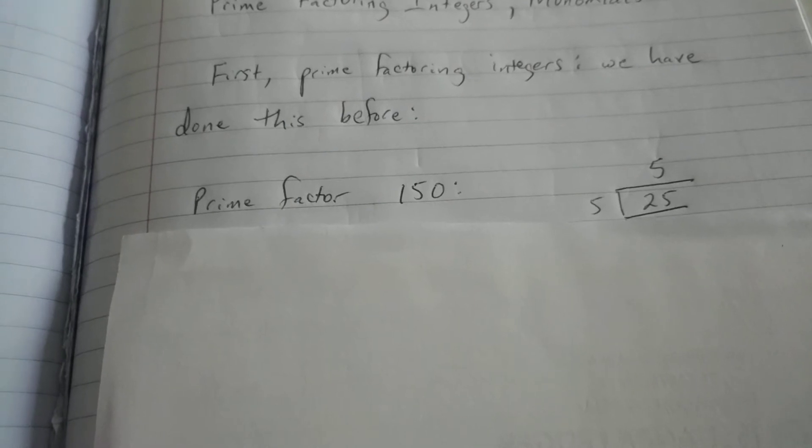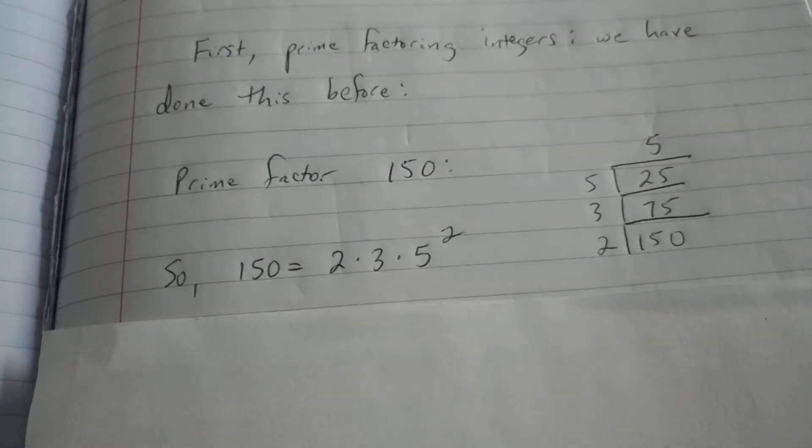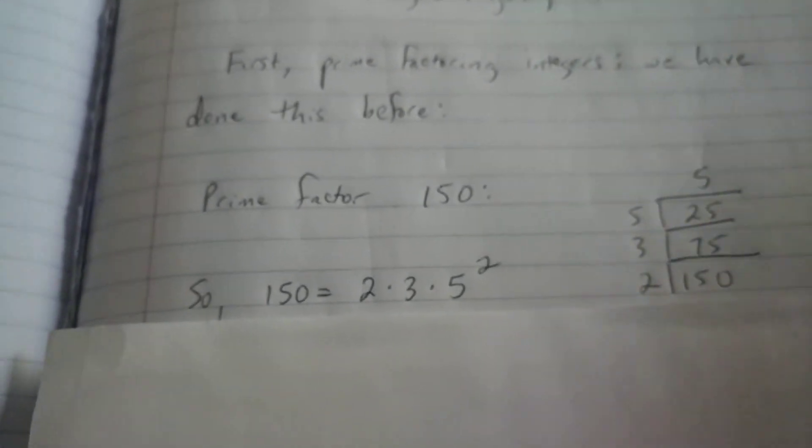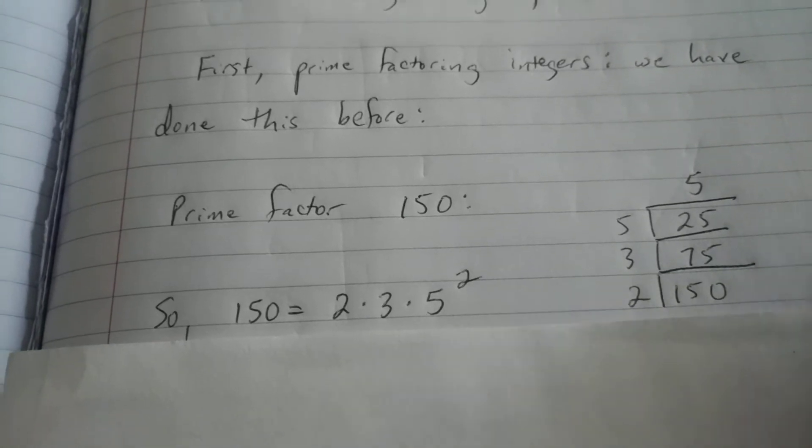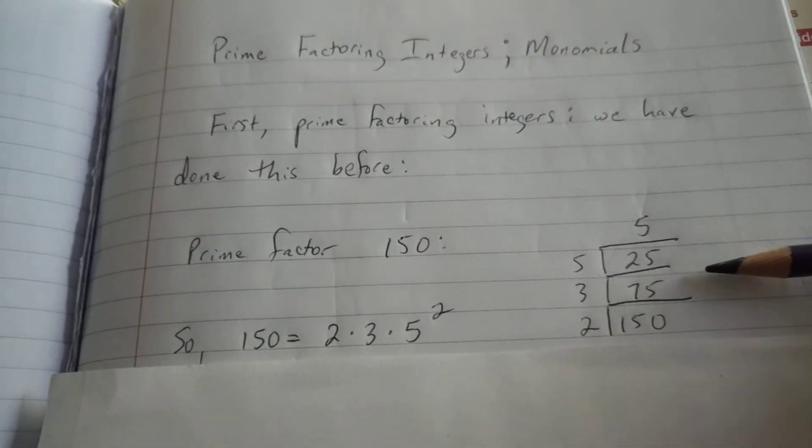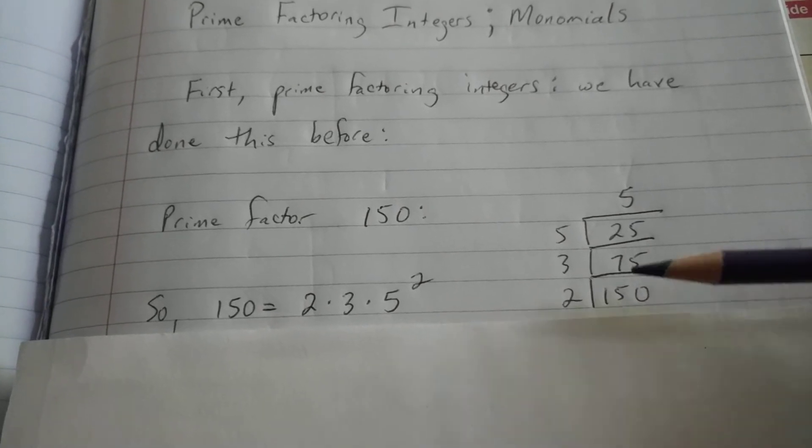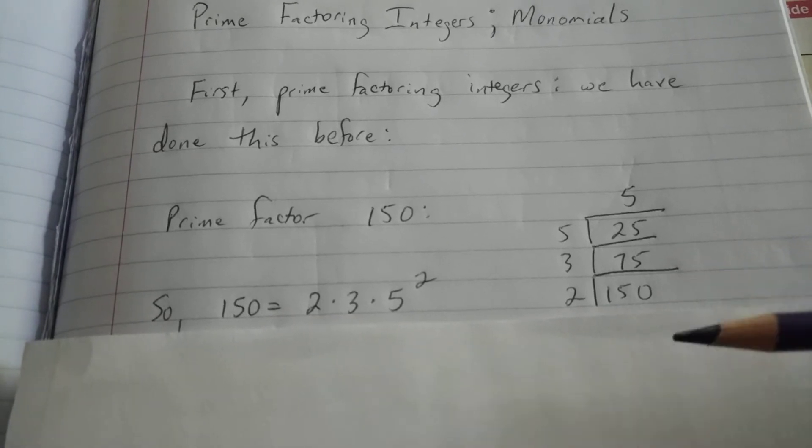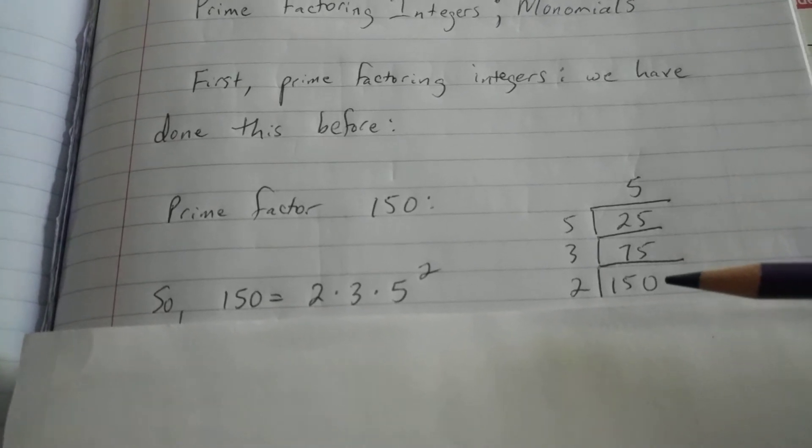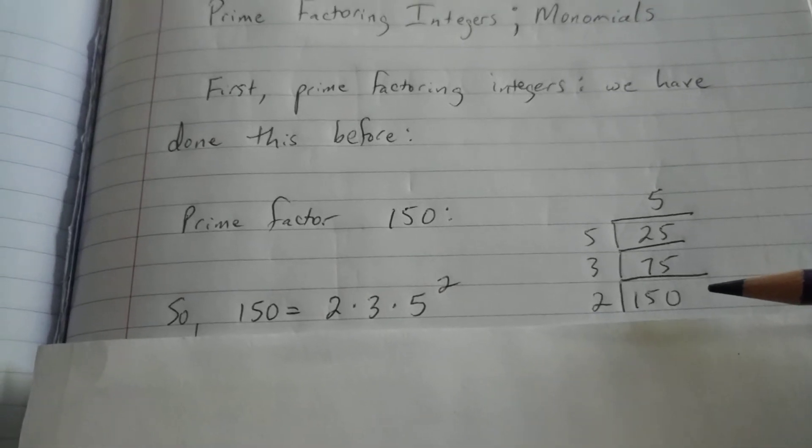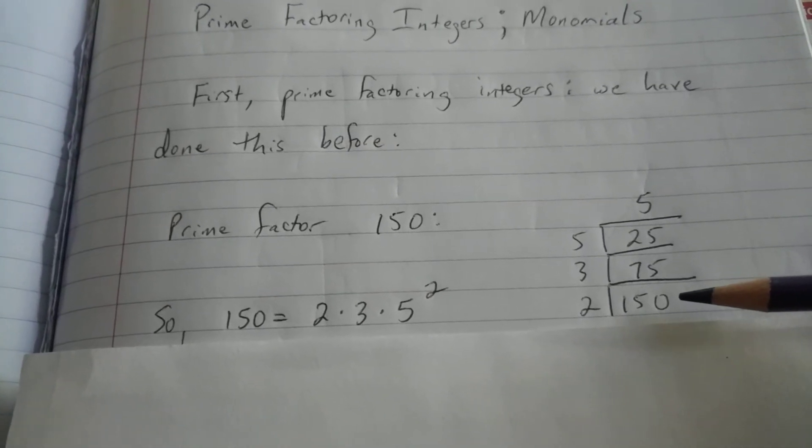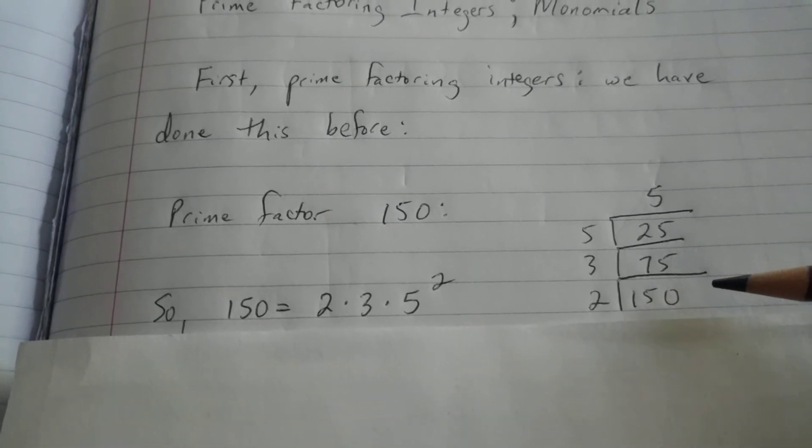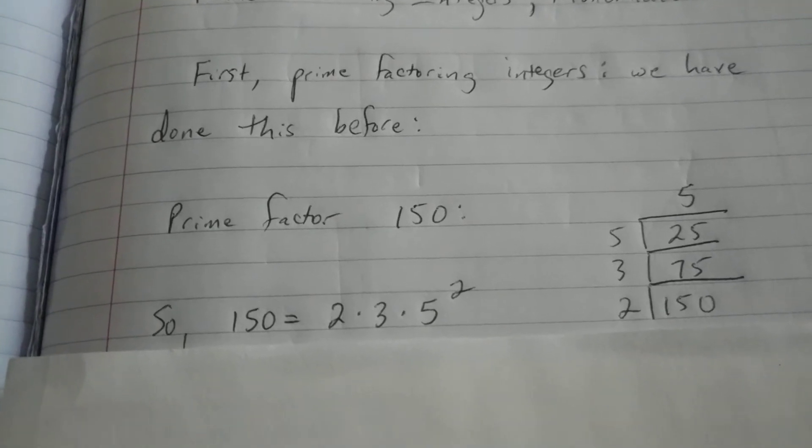We're going to use as an example, we're going to prime factor 150. Look over here to this table. 150 is in this little doghouse setup. When we start off prime factoring even integers, we're going to always start by dividing by 2, the smallest prime number, which is also the only even prime number.